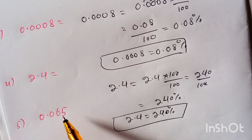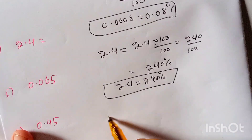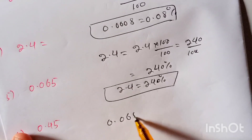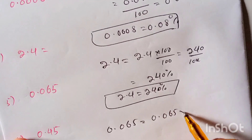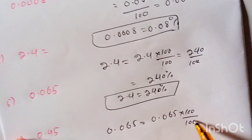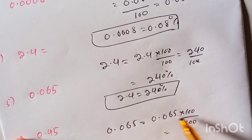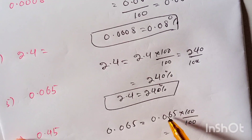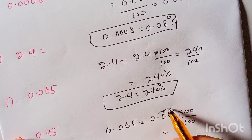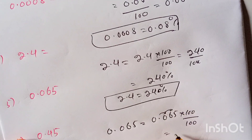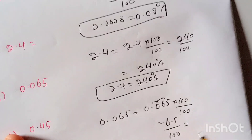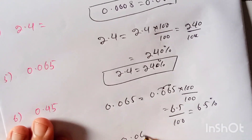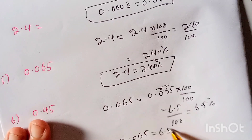Now, what is 0.065 in percentage? So 0.065 is equal to 0.065 multiplied by 100, divided by 100. To multiply 0.065 by 100, we will carry the decimal point two places from left to right — this is the first place and this is the second place — which is equal to 6.5/100, or 6.5 percent. So 0.065 is equal to 6.5 percent.